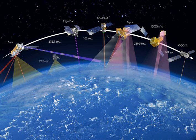An Earth Observation Satellite, or Earth Remote Sensing Satellite, is a satellite specifically designed for Earth observation from orbit, similar to spy satellites but intended for non-military uses such as environmental monitoring, meteorology, map making, etc.